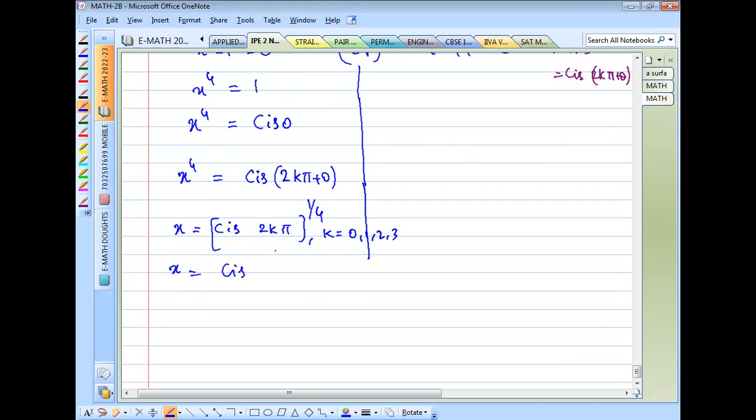Using De Moivre's theorem, the power equals the angle multiplied. For k equals 0, 1, 2, 3.